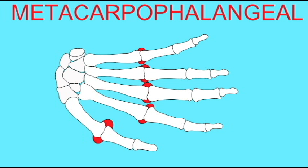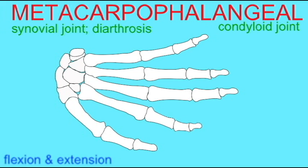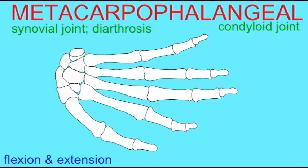The hand possesses five metacarpals and five proximal phalanges. The joints between these bones are synovial joints because they have joint capsules, and they are diarthroses because they allow for free movement. Structurally, they are condyloid joints.